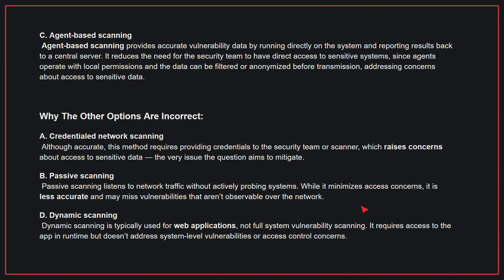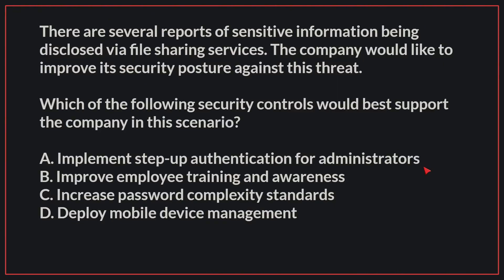Therefore, the correct answer is C. There are several reports of sensitive information being disclosed via file-sharing services. The company would like to improve its security posture against this threat. Which of the following security controls would best support the company in this scenario?